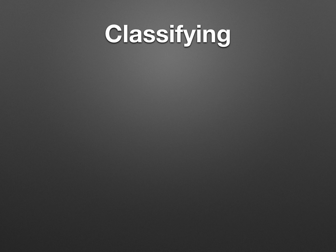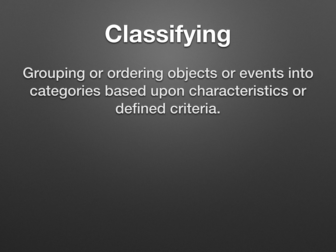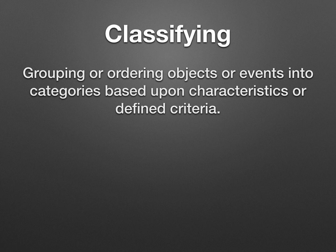The next science skill is classifying. You've been doing this since you were a kid. It's grouping or ordering objects or events into categories based on characteristics or defined criteria — meaning how things are alike or different, and you're sorting based on that. If I asked you to take a bag of Skittles and sort them based on color, you can sort them just based on the trait of color. If I asked you to line up, you can sort yourselves based on age, height, gender, likes, or dislikes. That's how you classify different things.